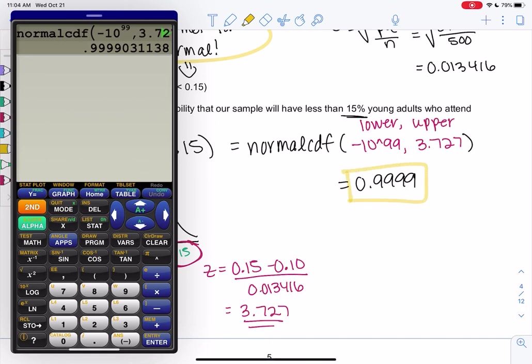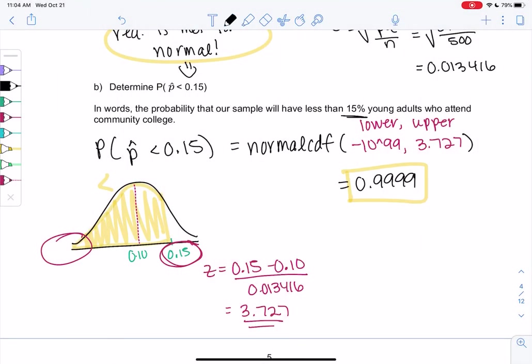So just a reminder of the normal curve, right? Step one is to find z-scores. And then step two is to find area with normal CDF.